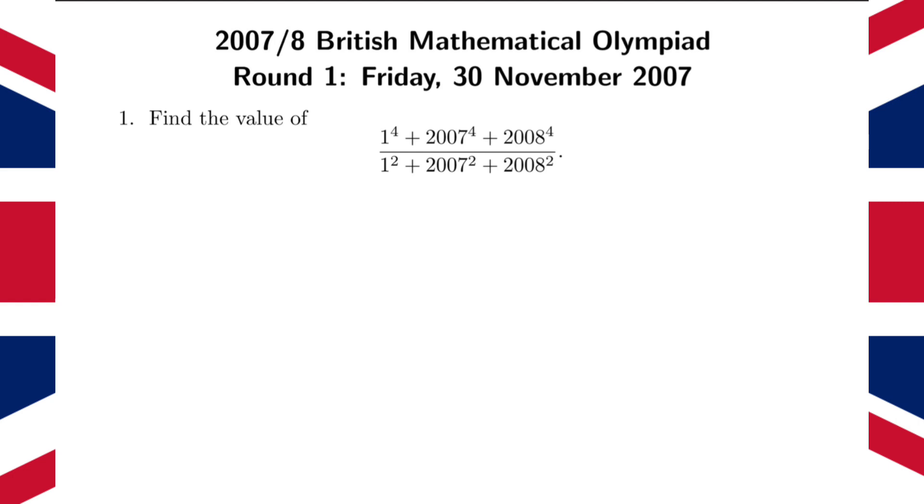And so what we're going to do is we're going to define a variable x. We're going to say, let x equal 2007. We're going to do a substitution, essentially, because if x is 2007, then that means that 2008 is just going to be x plus 1.